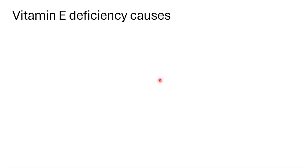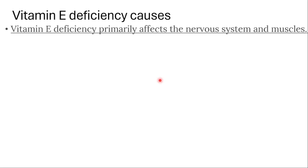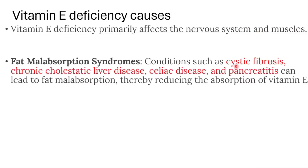Now, why might someone have a vitamin E deficiency? Deficiency primarily affects the nervous system and muscles. It can occur when you have fat malabsorption syndromes, such as cystic fibrosis, chronic cholestatic liver disease, celiac disease, and pancreatitis. These conditions lead to fat malabsorption, thereby reducing the absorption of vitamin E.